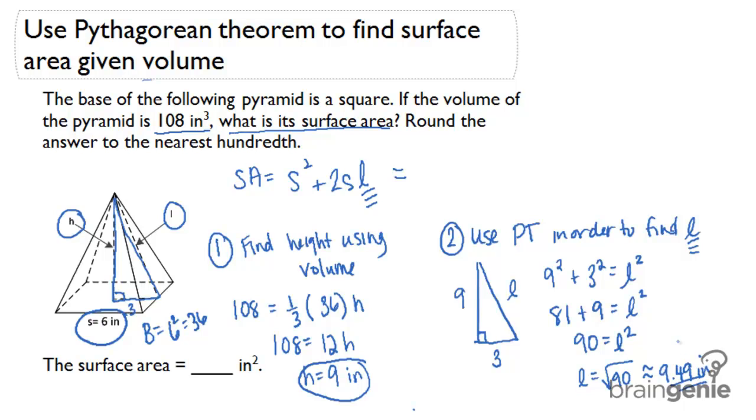Now I can use that slant height in my surface area calculation. The surface area formula says side squared, so I'll put 6 squared plus 2 times the side length times the slant height. If I do out this addition and this multiplication, I'll get the surface area to be 149.88 inches squared. And I'm just going to write this over here on the line: 149.88.